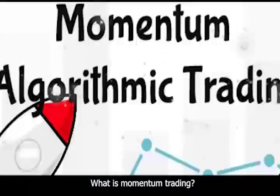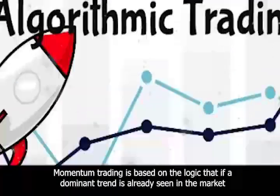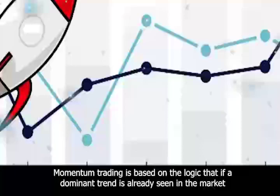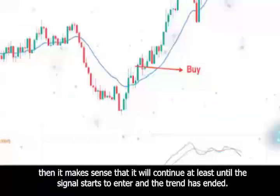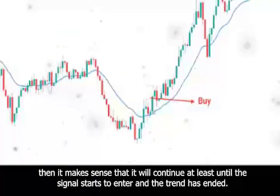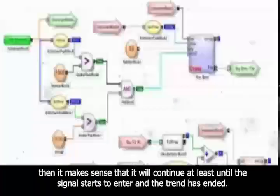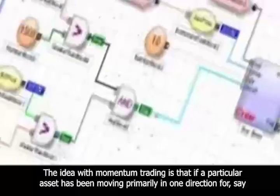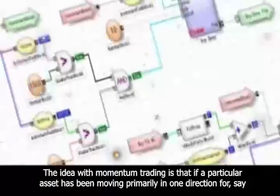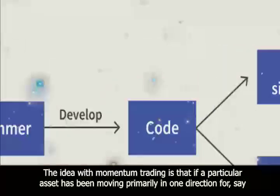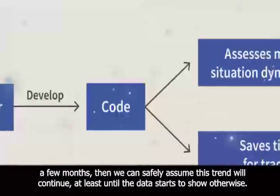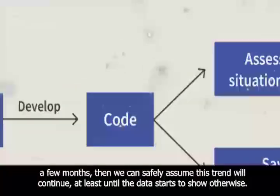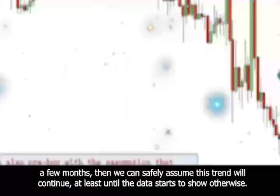What is Momentum Trading? Momentum trading is based on the logic that if a dominant trend is already seen in the market, then it makes sense that it will continue at least until the signal starts to show the trend has ended. The idea is that if a particular asset has been moving primarily in one direction for, say, a few months, then we can safely assume this trend will continue at least until the data starts to show otherwise.